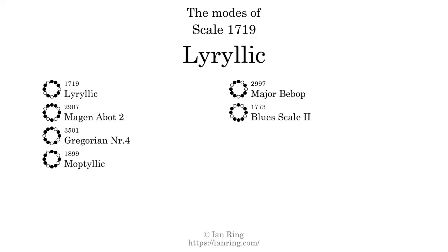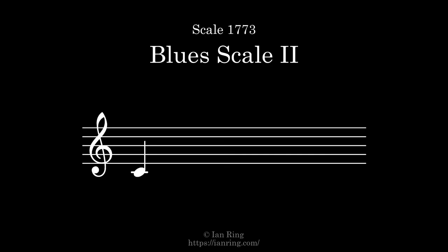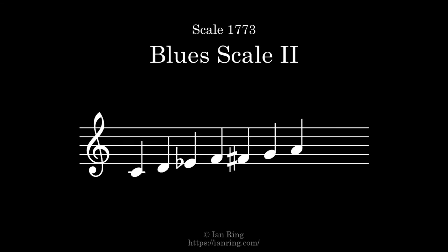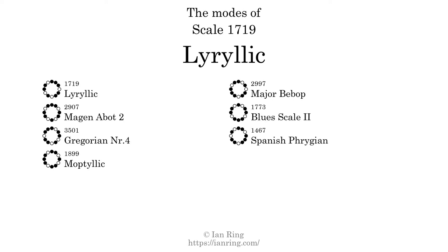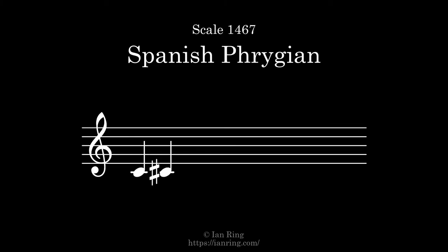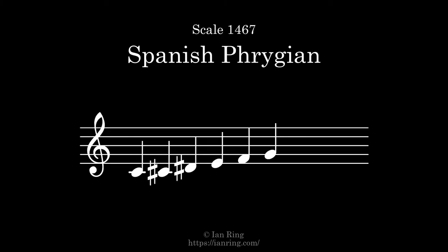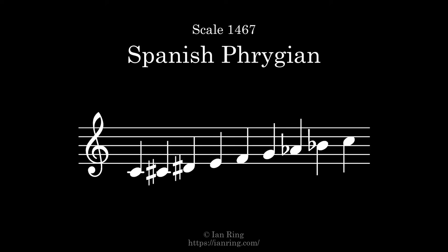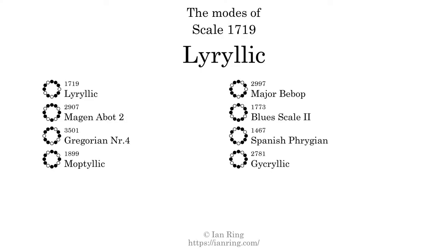The sixth mode is Scale 1773, also known as Blue Scale 2. It sounds like this. The seventh mode is Scale 1467, also known as Spanish Phrygian. It sounds like this. The eighth and last mode is Scale 2781, also known as Gecrylic. It sounds like this.